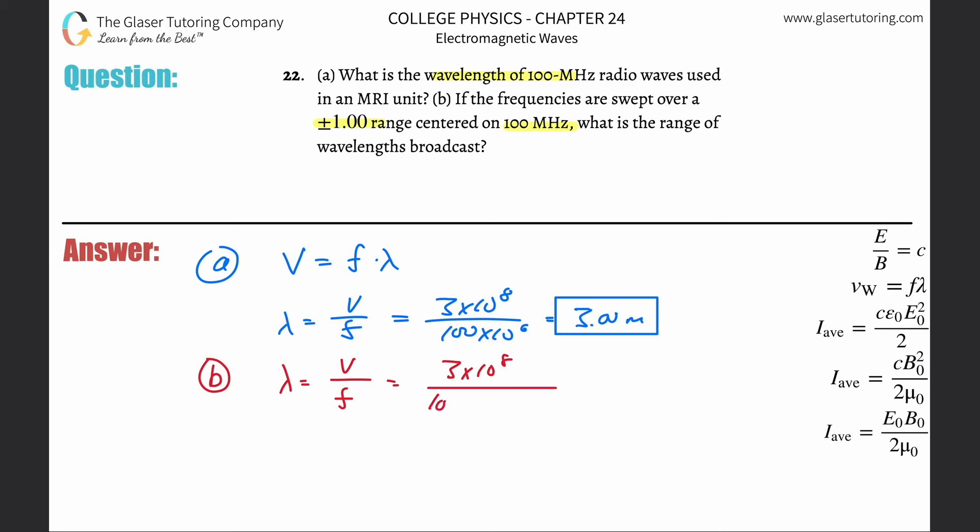So in one case, you're going to take the 100 times 10 to the six and subtract one from it because that's on one band. And then you're also going to do it for the other side, three times 10 to the eight. Then you're going to divide it by 100 times 10 to the six plus one. And you're going to do basically two calculations here.